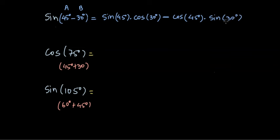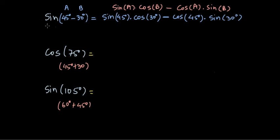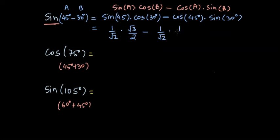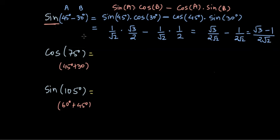This formula involves only sine and cos for standard angles we already know. It is sin(a)cos(b) minus cos(a)sin(b). Sine and cos appear in tandem in multiplication when finding the sine of a subtraction of two angles, and because it's a subtraction, we also have a subtraction inside the formula. So: (1/√2)(√3/2) minus (1/√2)(1/2) gives √3/(2√2) minus 1/(2√2), which equals (√3 − 1)/(2√2). That's sine of 15 degrees.